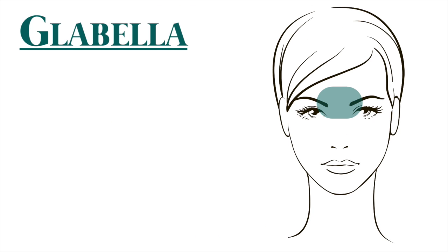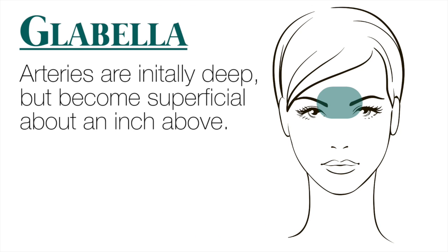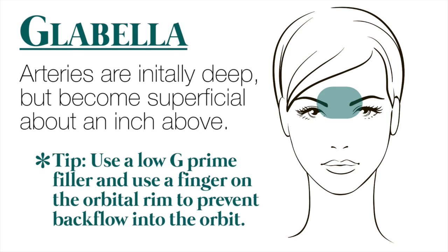In the glabella, the supraorbital and supratrochlear arteries initially are deep, and then about an inch above their foramina they become more superficial. So use a low G prime filler while putting a finger on the supraorbital rim to prevent backflow into the orbit.